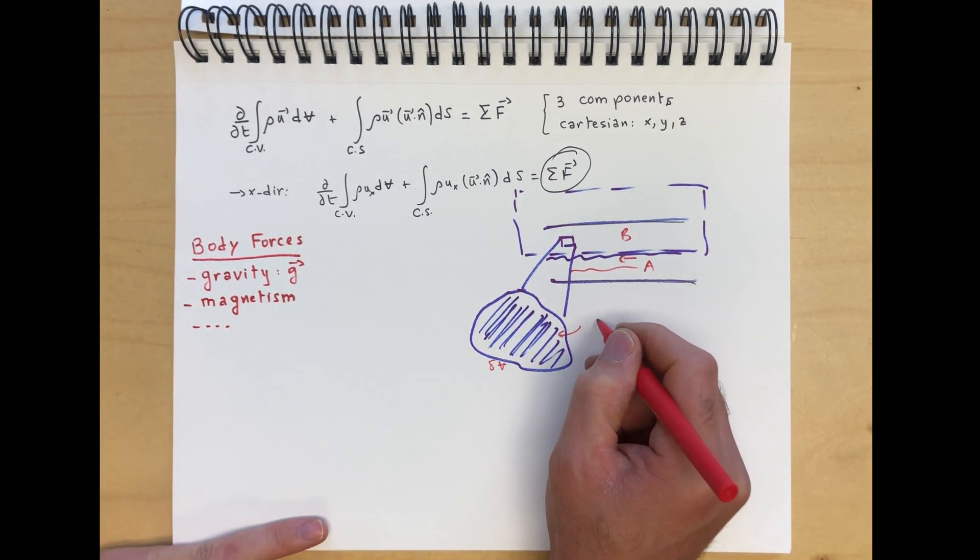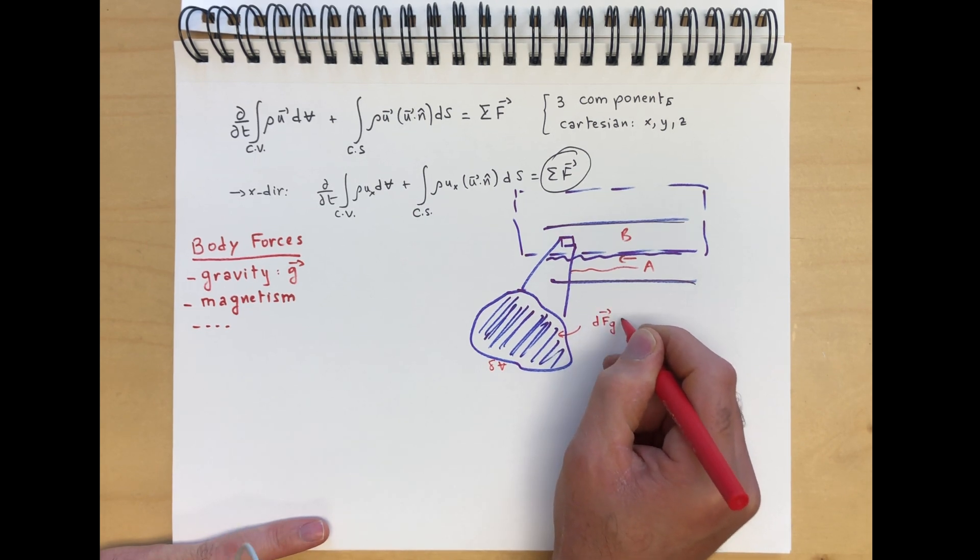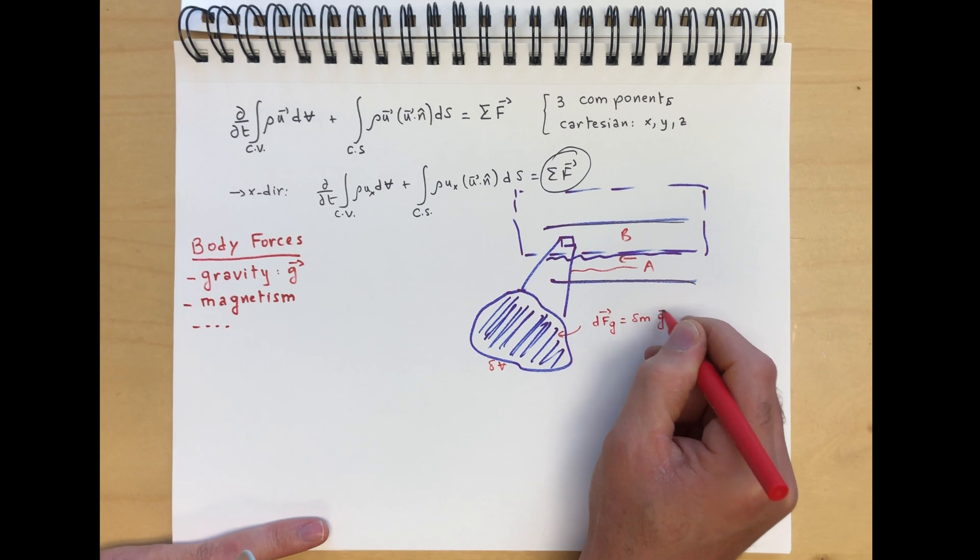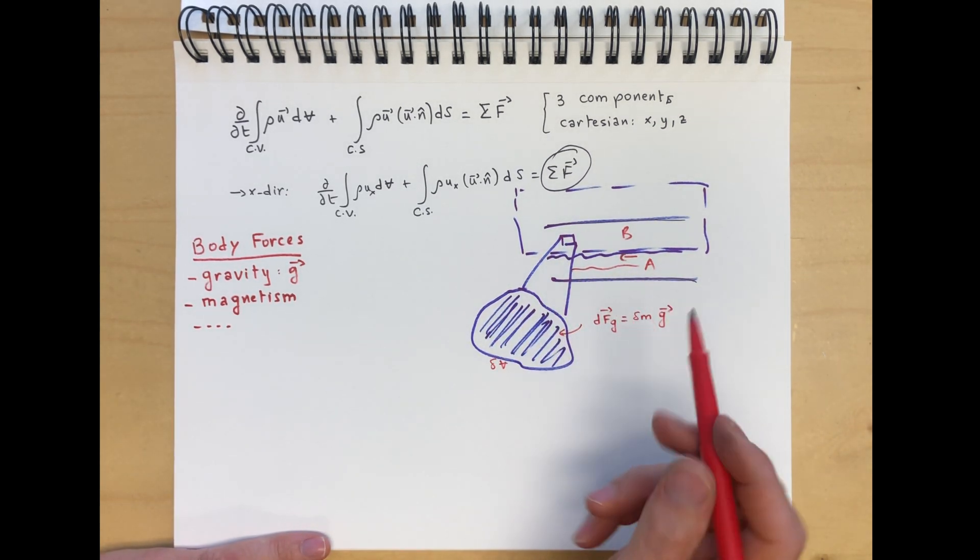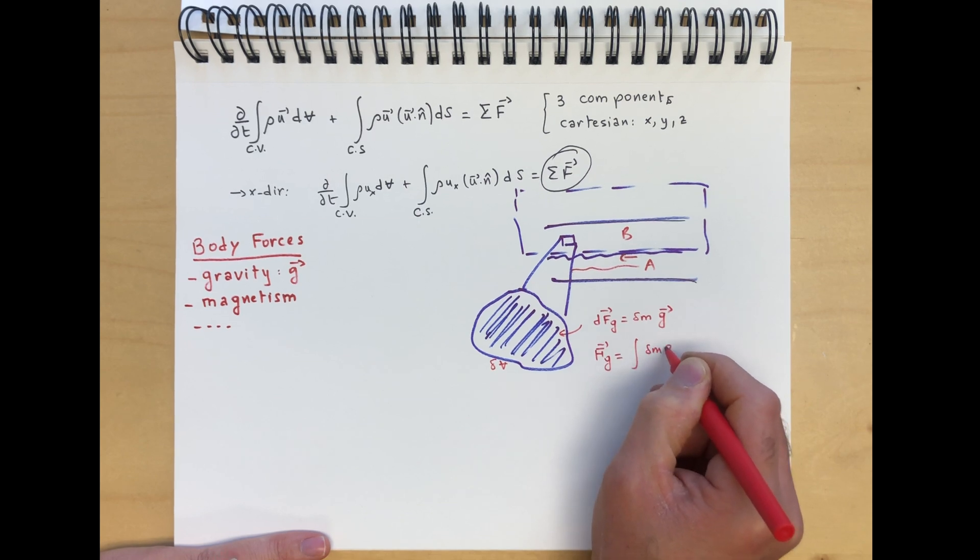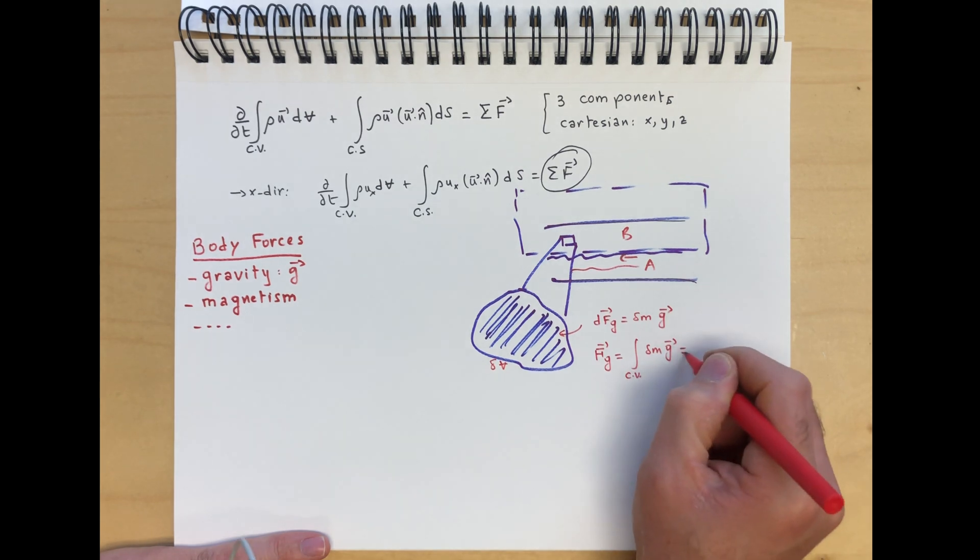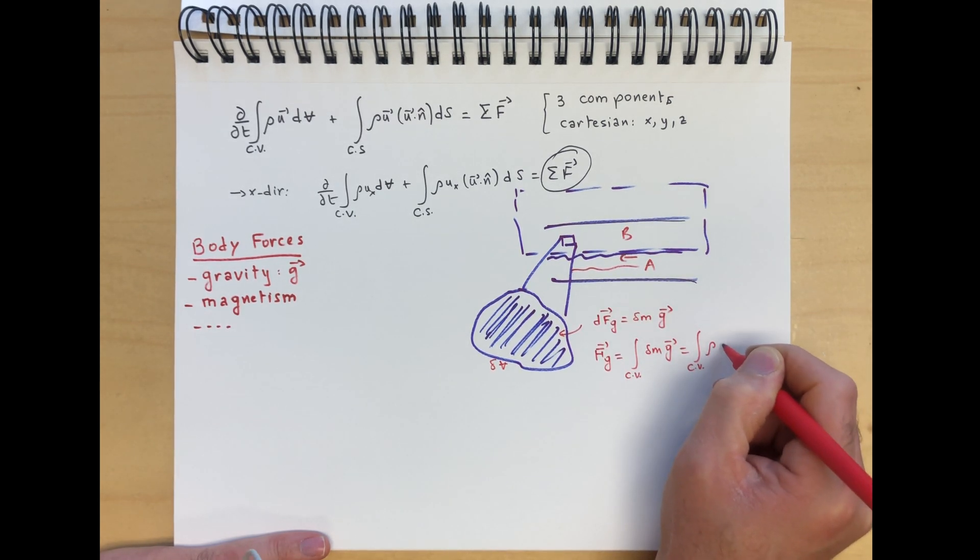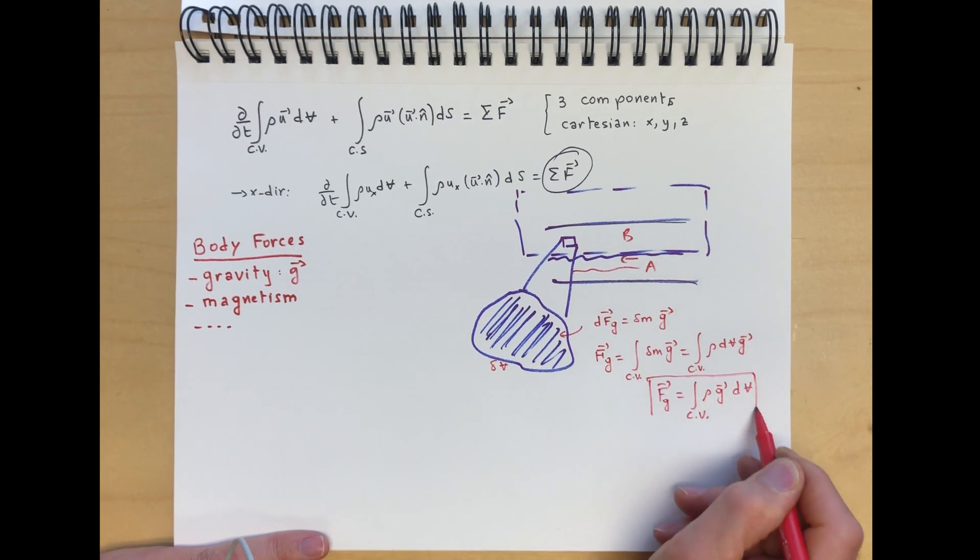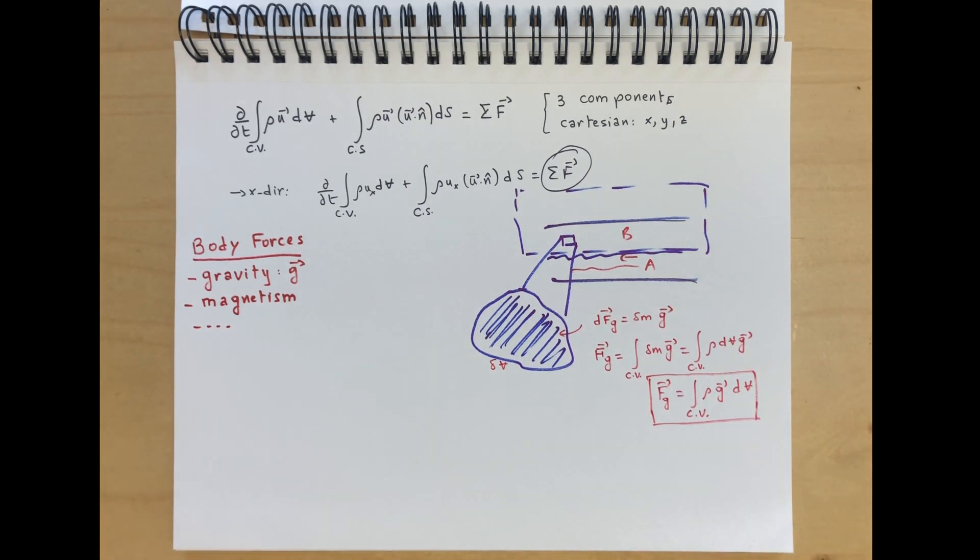Gravity is equal to delta M, the mass contained in here, delta M times gravity. Then, when integrated to a material system, the force of gravity is F_gravity equal integral of delta M g over the control volume, which is equal to the integral control volume of rho dV times g, or rho g dV. So this is the body force that we are going to consider in this class for gravity, the only body force that we're going to consider. That's the force of gravity.